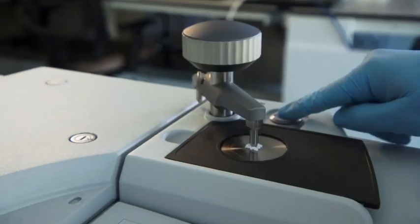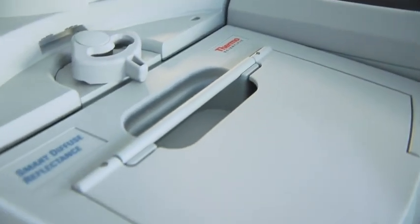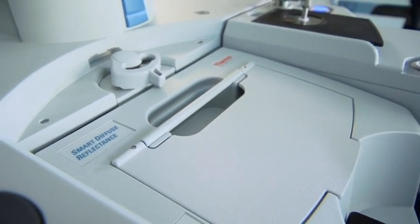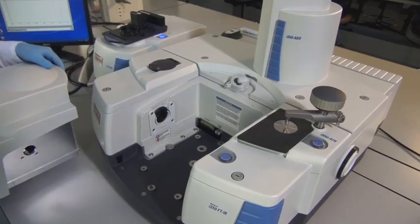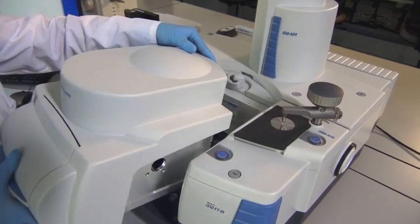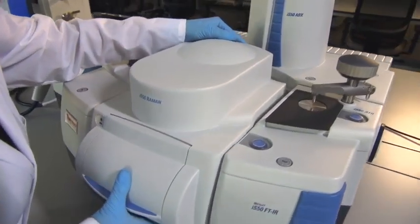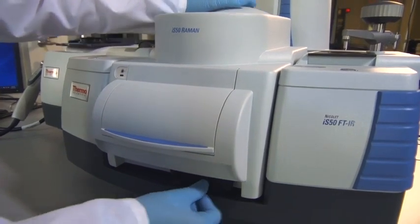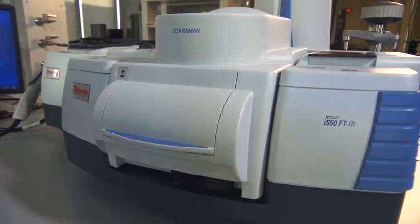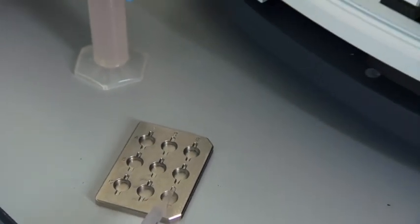Since the ATR is built-in, your sampling compartment is free for any other accessory. For example, working in tandem with a built-in ATR, the IS50 Raman module lets you rapidly switch from mid-infrared to Raman without reconfiguring optics or waiting for the instrument to stabilize.